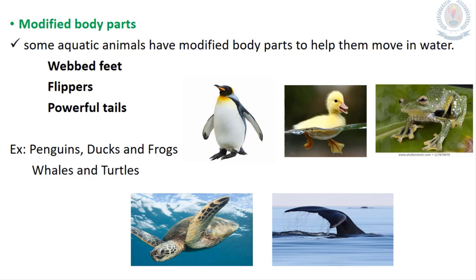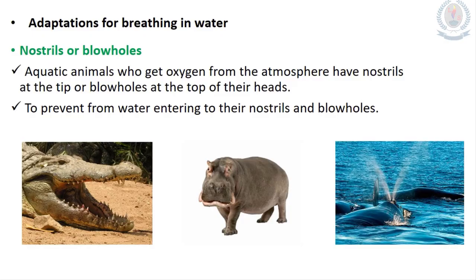Some aquatic animals have special body parts called modified body parts. Those body parts help them to move in water. Penguins, ducks and frogs have webbed feet, the tortoise has flippers, and the whale has a powerful tail. All these body parts help them to move in water.